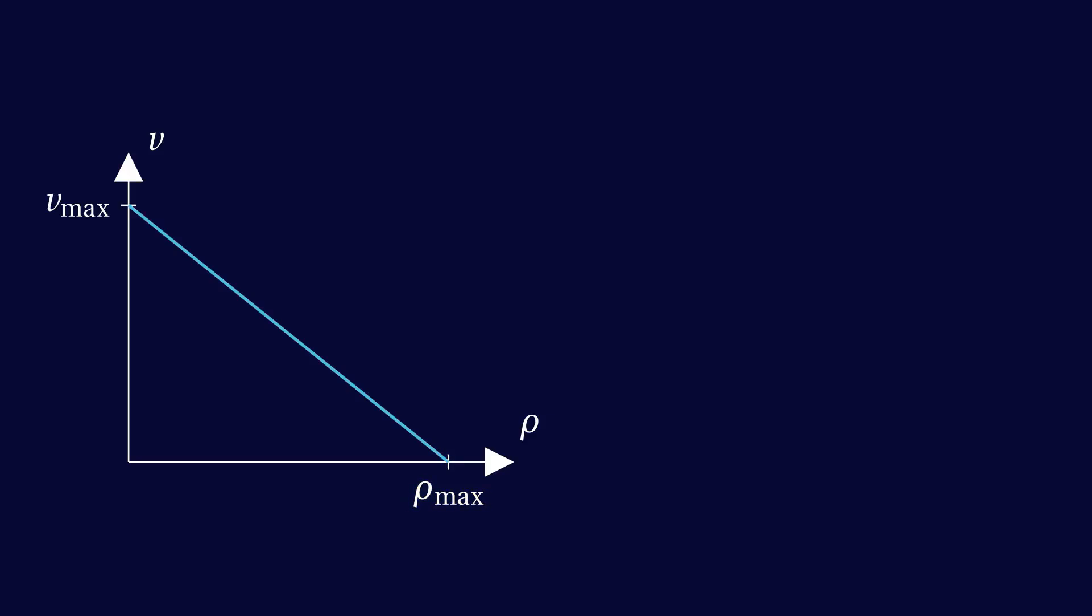Let's normalize density and speed. This means we choose units of density and speed, such that the maximum density and maximum speed are both equal to one. This will simplify the formulas a little.